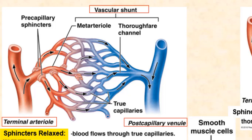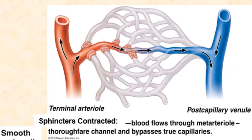When the sphincters are contracted, the lumens are constricted and the entrances into the true capillaries are closed. This shuts off blood flow into the true capillaries, so blood is restricted to only flow through the vascular shunt, since no pre-capillary sphincters are present along its length.